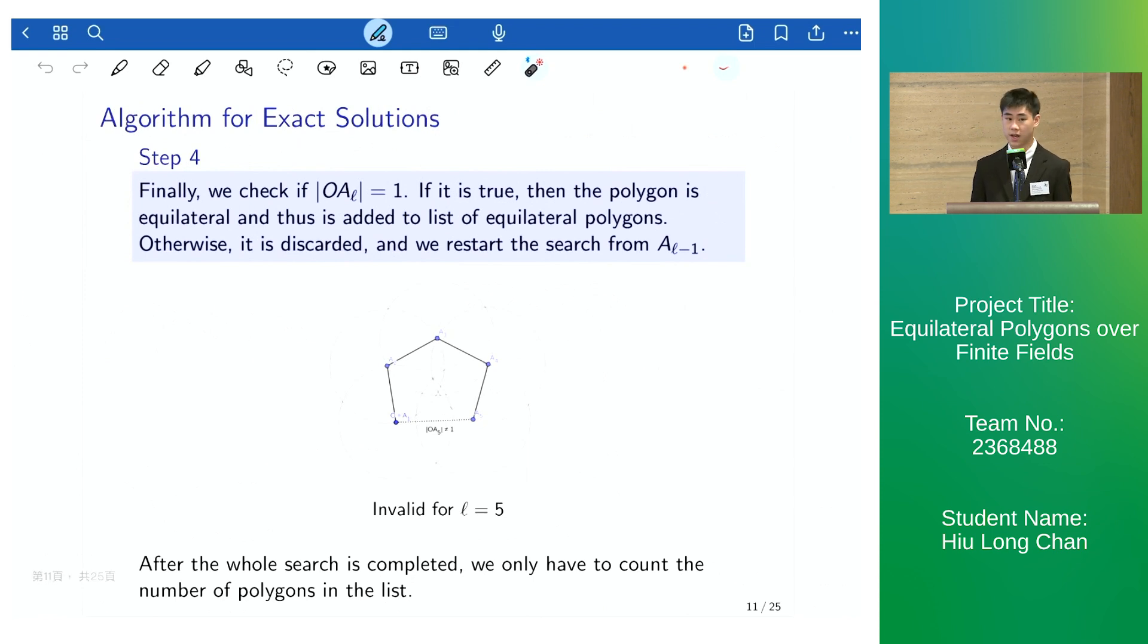Finally, if we check that the last vertex does indeed close up into an equilateral polygon, otherwise it is discarded and we restart the search from the last vertex.